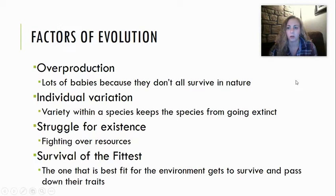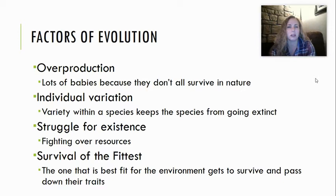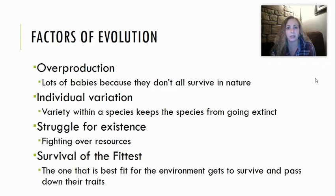We spent a day in class talking about the factors of evolution and there are four main factors you need to know: overproduction, individual variation, struggle for existence, and survival of the fittest. Overproduction is just the tendency for organisms to have lots and lots of babies, especially in nature. If we're not talking about the top predators, we see that organisms have lots of babies — because just naturally, all of those organisms are not going to make it. So to ensure the ability to pass down traits, lots of babies are had. That way, if some are lost, there are still some there to carry on that genetic line.